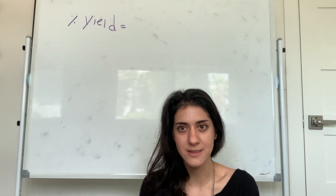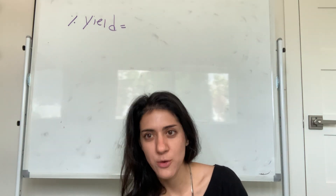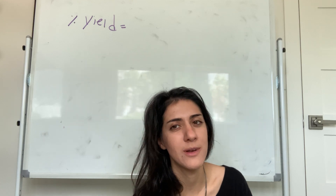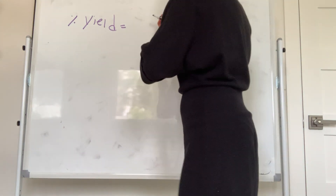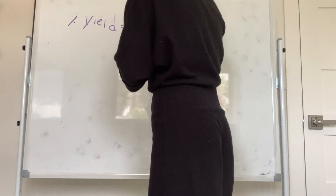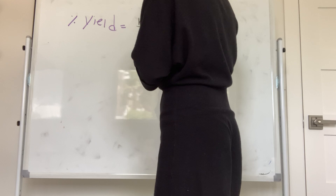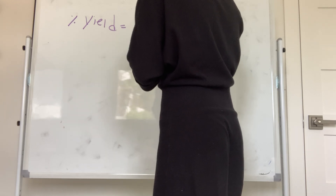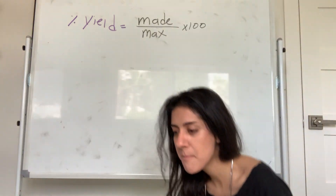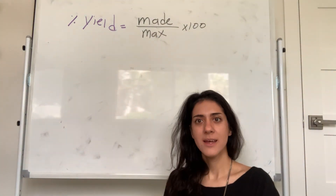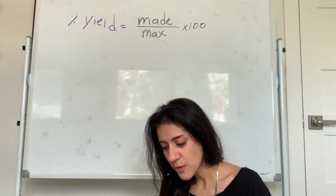Today we're going to talk about percent yield. I'm going to give you the equation for percent yield and then a non-chemistry example to explain what it means. Percent yield is made over max times 100%. That's your percent yield.